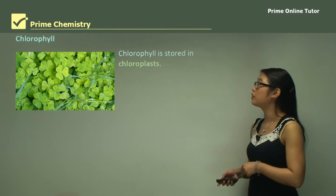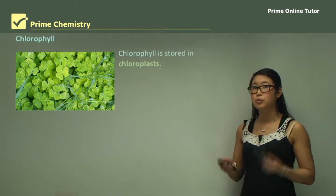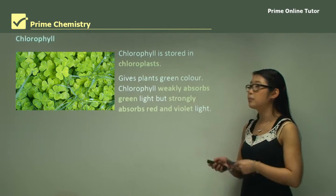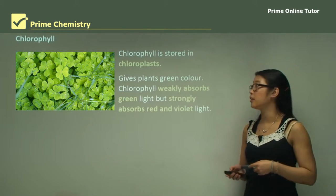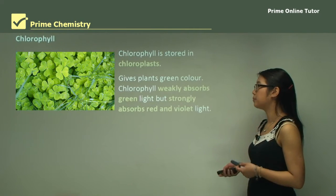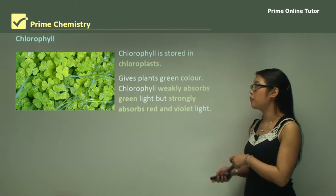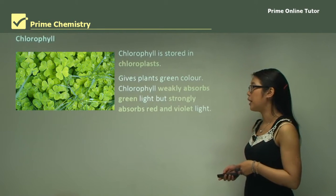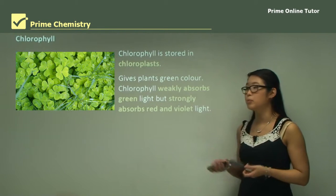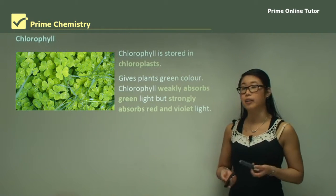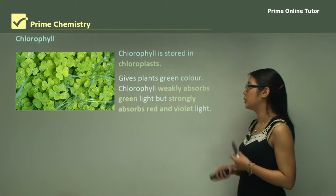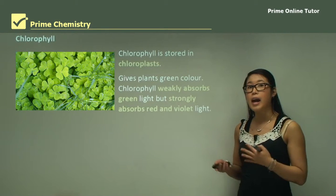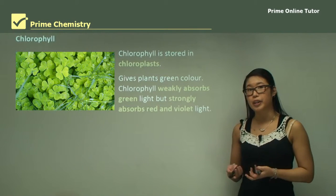Chlorophyll is stored in chloroplasts in plants and this is what gives plants their green colour. Chlorophyll weakly absorbs green light but strongly absorbs red and violet light, which is why it reflects the green and gives plants that green colour.